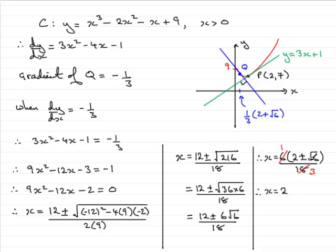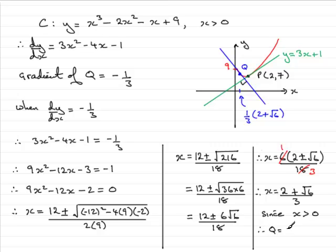We can't take the minus root 6 solution because that would give a negative value of x, and x must be greater than 0. So we take only the plus version, giving x equals 2 plus root 6, all divided by 3. Therefore the x-coordinate of Q equals one third bracket 2 plus root 6, which brings us to the end of this question.